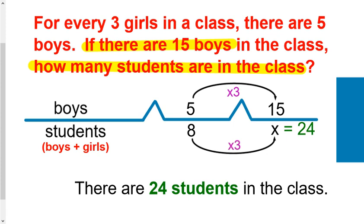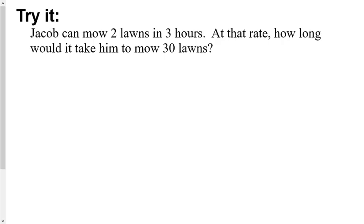Now that we've had a chance to review this, I want you to try a few on your own. I'm going to put up some examples. I want you to read the example, pause the video so you can solve the problem, and then go forward with the video and see if you were correct. Here's our first question: Jacob can mow 2 lawns in 3 hours. At that rate, how long would it take him to mow 30 lawns? Take a moment, think about how you can set this bridge map up. What two things are being compared? What is that comparison? And then what's the question you're being asked? Go ahead and set up and solve it. Make sure you pause.